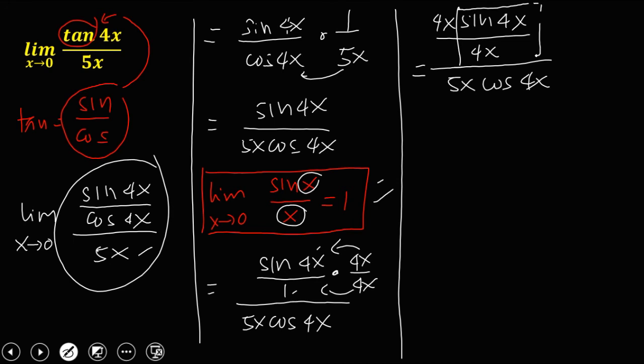Then using this theorem, so this sine 4x over 4x, that's equal to 1. So we have now 4x times 1 over 5x then cosine 4x. Then we can cancel this x, so this becomes 4 over 5 then cosine 4x.